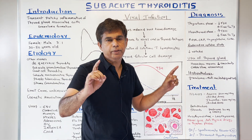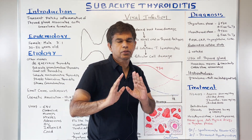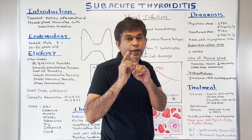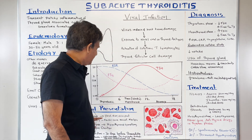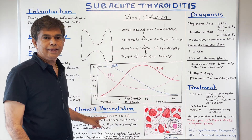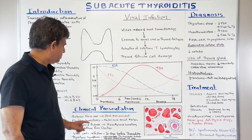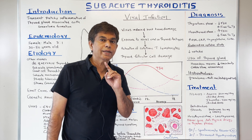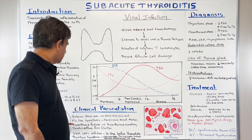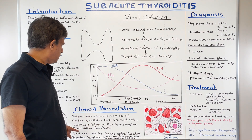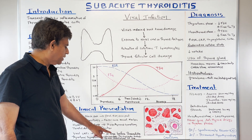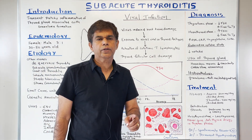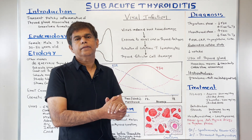The clinical presentation starts with a thyrotoxicosis or hyperthyroid picture. Key features include anterior neck pain that travels to the jaw, ear, and occiput. There are also flu-like symptoms — typically upper respiratory symptoms occurring about 30 days before onset. Hyperthyroid features include nervousness, tachycardia, sweating, tremors, palpitations, and weight loss — this thyrotoxicosis picture is the first phase.